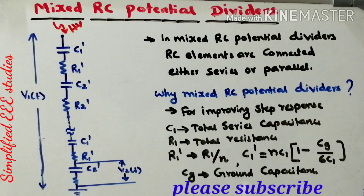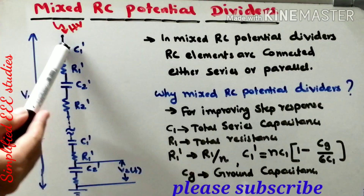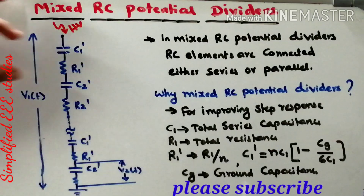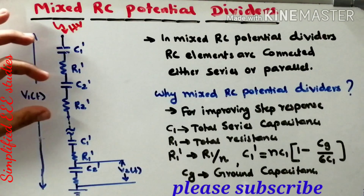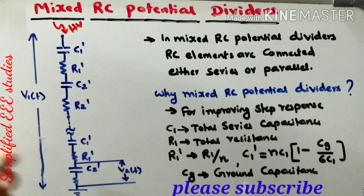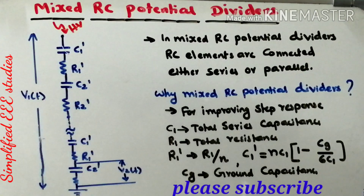Furthermore, it obeys the voltage division formula. As you can see, this is a diagram of Mixed RC Potential Divider. You can see different arms. In the first arm, you can see C1-R1. In the second arm, you can observe C2-R2. It will be continuing — depending on the requirement, you can connect RC elements.